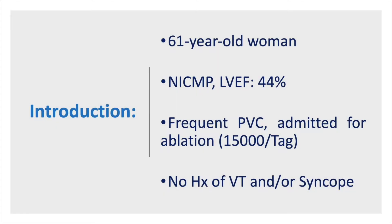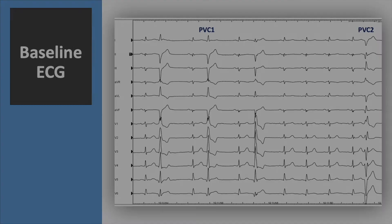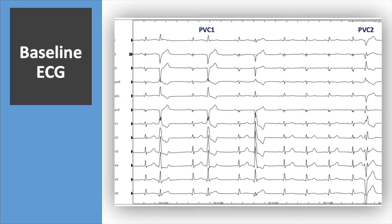The patient is a 61-year-old woman with non-ischemic cardiomyopathy and moderate LV dysfunction and frequent PVCs with more than 15,000 PVCs per day, who was admitted for catheter ablation to our center. She had no history of VT, presyncope, or syncope. She had different PVC morphologies, but all from almost the same region, so we decided to map and ablate all the PVCs in this patient.